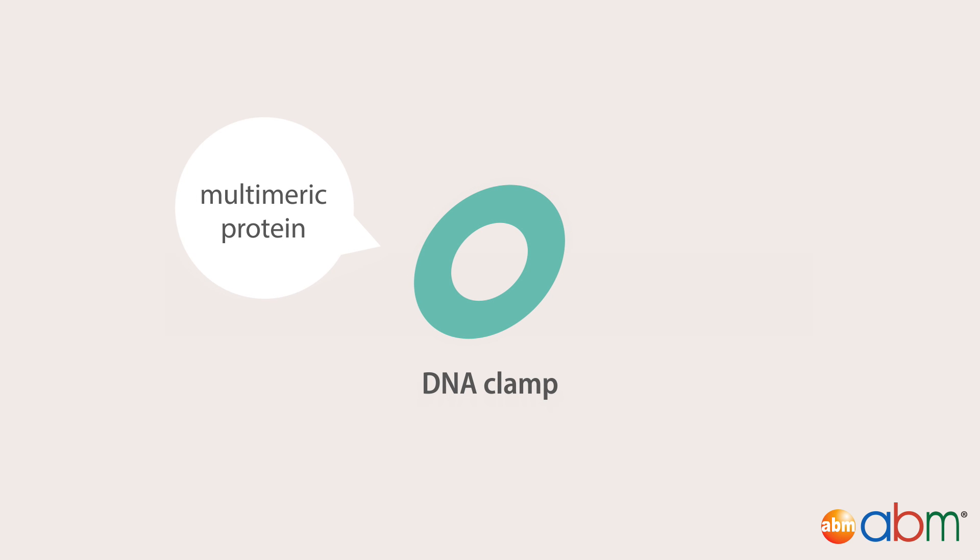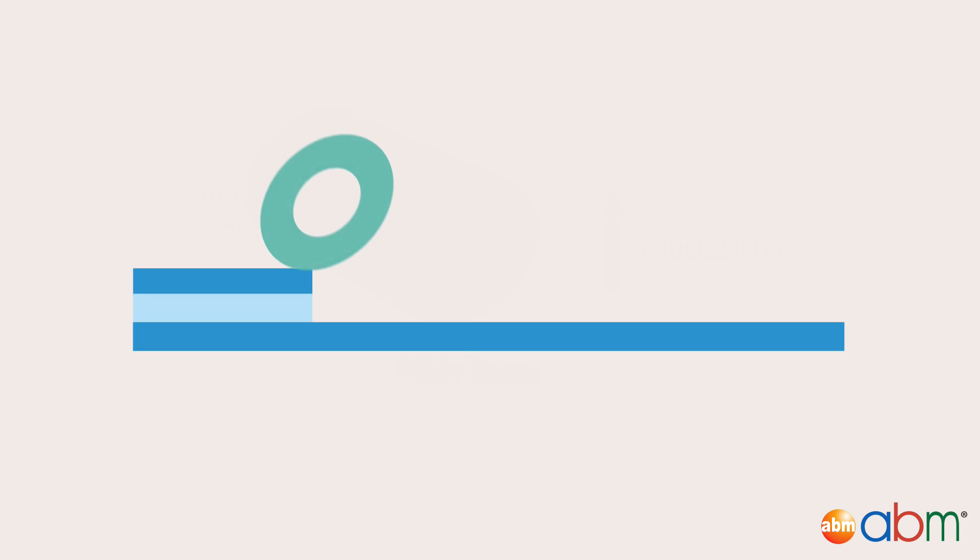DNA clamps are multimeric proteins that interact with DNA polymerase, increasing processivity. DNA clamps slide along the DNA strand and interact with the polymerase to stimulate association between the polymerase and the DNA strand, facilitating a timely replication.